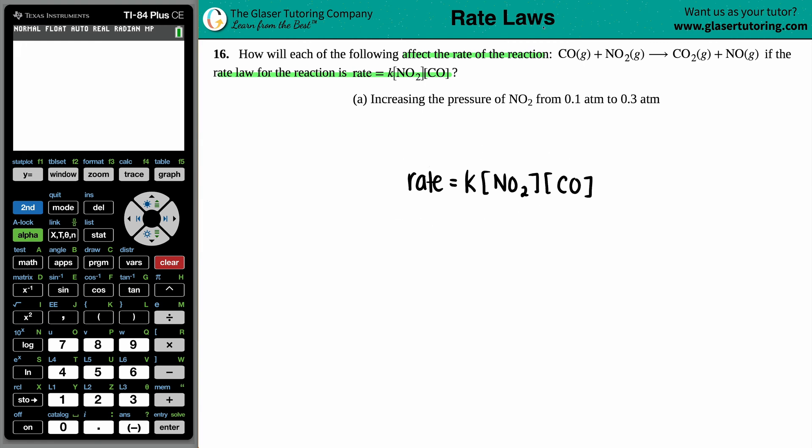Now in this case we're talking about changes. We're increasing the pressure of NO₂ from 0.1 atm to 0.3, and because of that change we want to know how the rate is going to be affected. When we say how is that rate going to be affected, we want to know what's going to happen to the change in the rate.